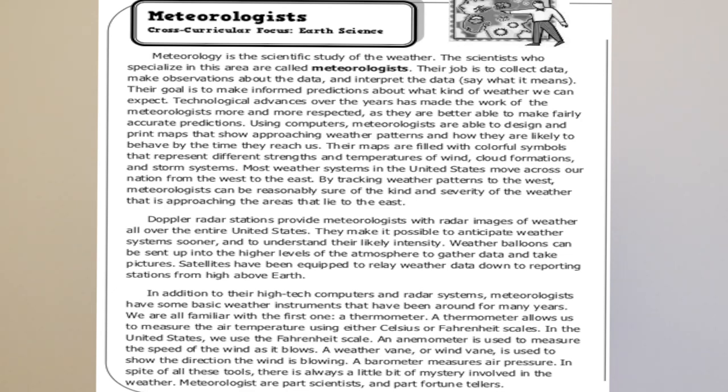In addition to their high-tech computers and radar systems, meteorologists have some basic weather instruments that have been around for many years. We are all familiar with the first one — a thermometer. A thermometer allows us to measure the air temperature using either Celsius or Fahrenheit scales; in the United States we use the Fahrenheit scale. An anemometer is used to measure the speed of the wind as it blows. A weather vane, or wind vane, is used to show the direction the wind is blowing. A barometer measures air pressure. In spite of all these tools, there is always a little bit of mystery involved in the weather — meteorologists are part scientists and part fortune tellers.